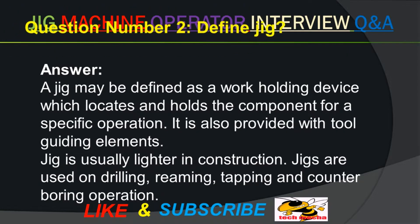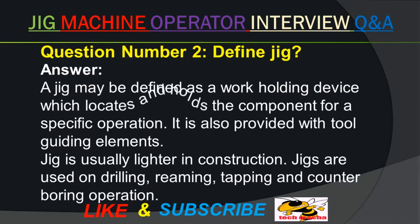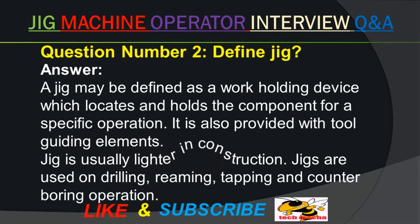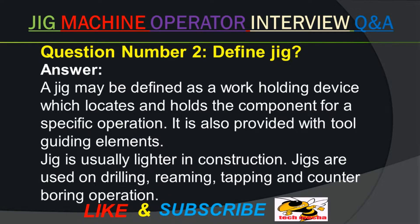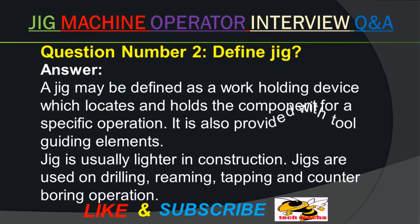Question number two. Define jig. Answer. A jig may be defined as a work holding device which locates and holds the component for a specific operation. It is also provided with tool guiding elements. Jig is usually lighter in construction. Jigs are used on drilling, reaming, tapping and counter boring operations.